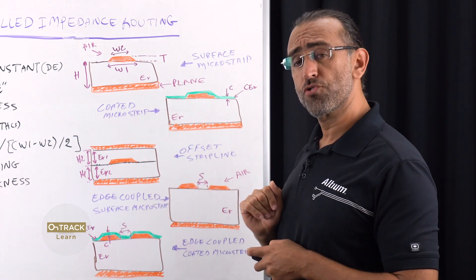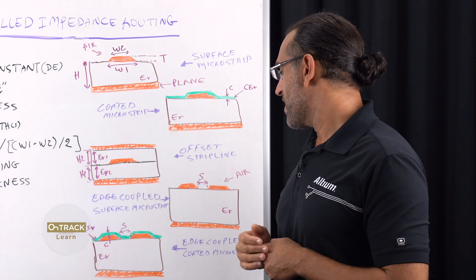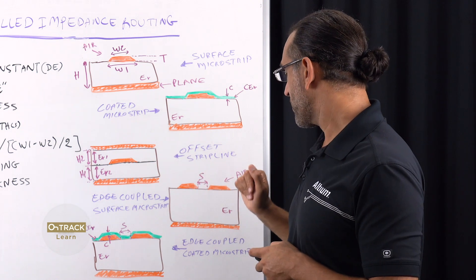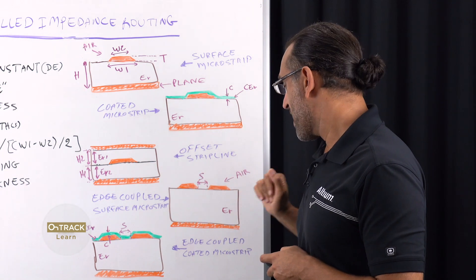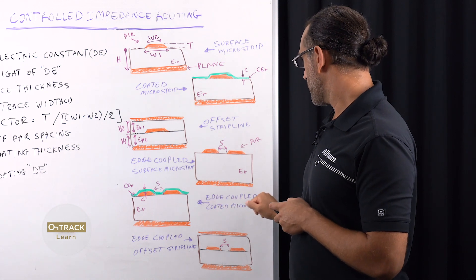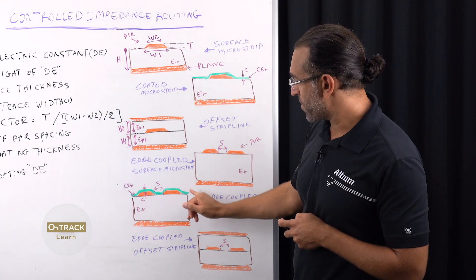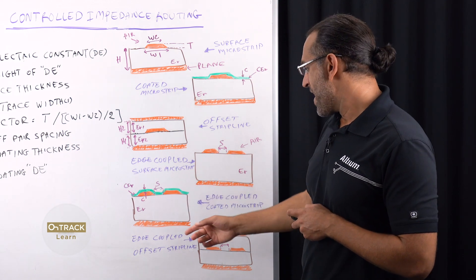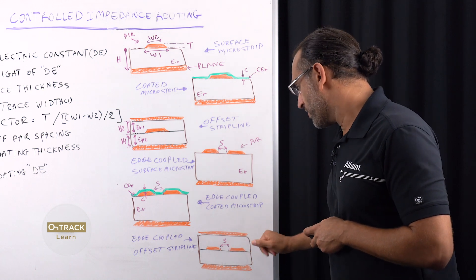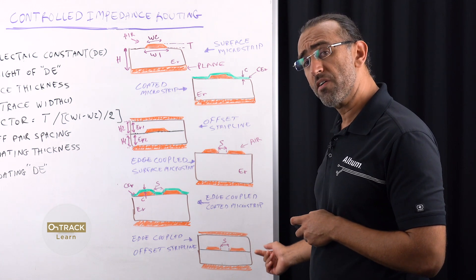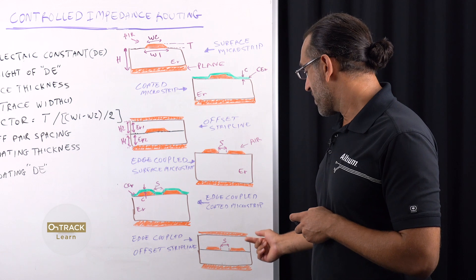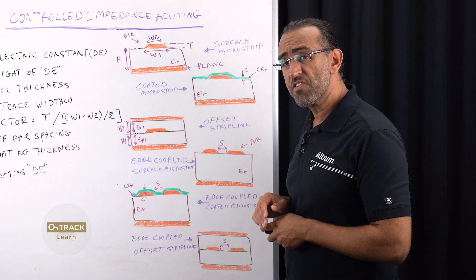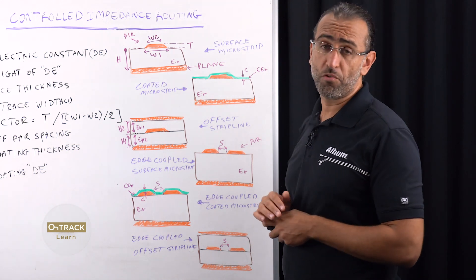Edge coupled surface microstrip is a differential pair configuration exposed to air with no solder mask and a single plane from one side. The edge coupled coated microstrip is similar, except that you have a solder mask to account for because it's not exposed to air. We also have the edge coupled offset stripline, which is a differential pair configuration with tracks sandwiched inside the PCB and shielded by two planes, one from each side.